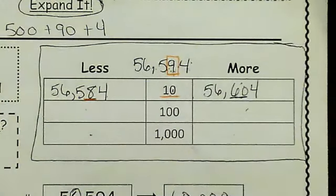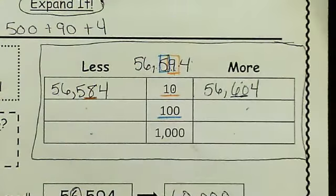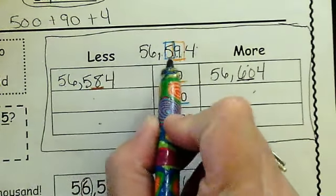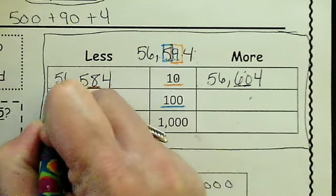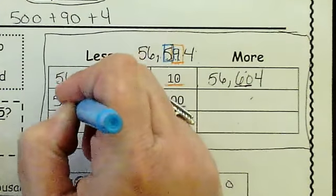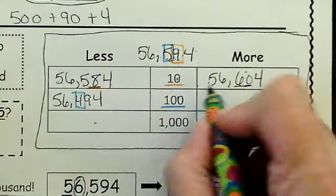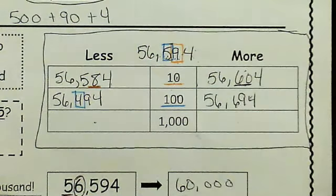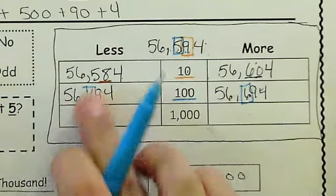Let's do the next one. The next one is the hundreds place. My 5 is in the hundreds place, so my 5 is what's going to be changing this time around. So let's do less. What's 100 less than 500? Well, that would be 400. Nothing else changes except my hundreds place. What about if I go 100 more than this one? Nothing changes except my hundreds place, and it went up by 1 and it went down by 1.